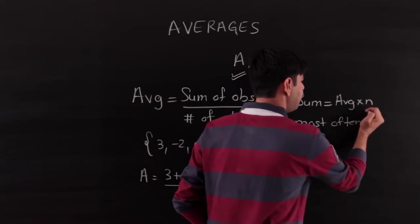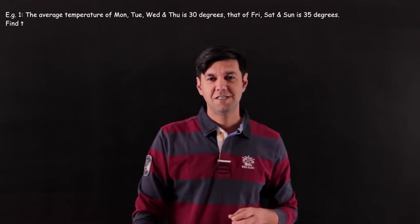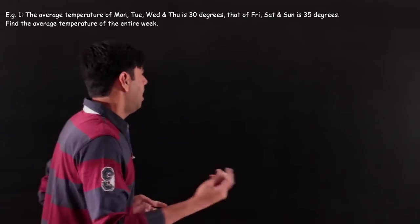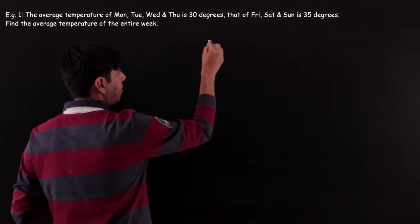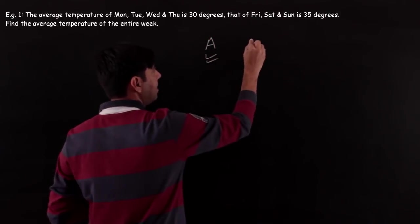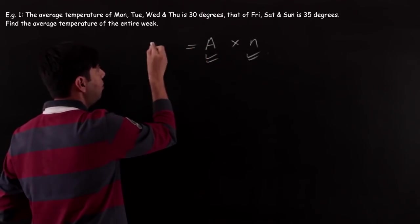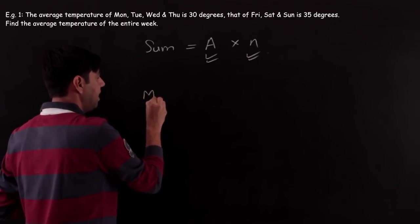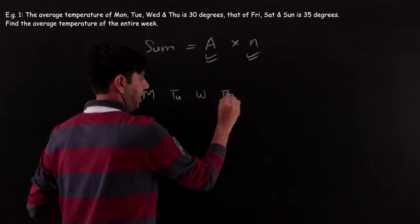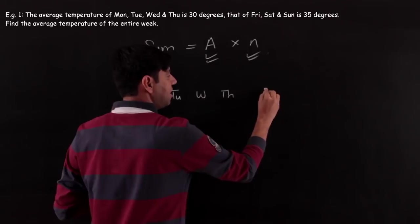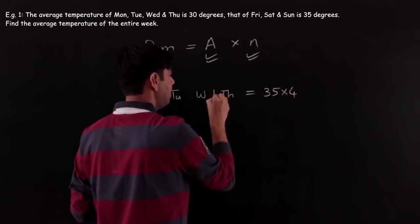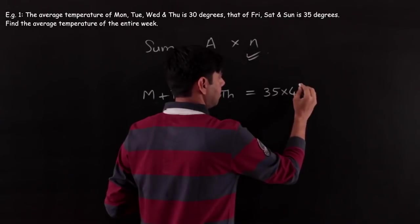Let's start with a question. The average temperature on Monday, Tuesday, Wednesday, Thursday is 30 degrees; that on Friday, Saturday, Sunday is 35 degrees. Find the average temperature of the week. The first set covers Monday to Thursday — four observations with average 30, so the sum is 30 × 4 = 120.